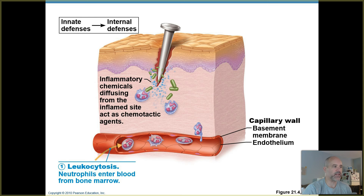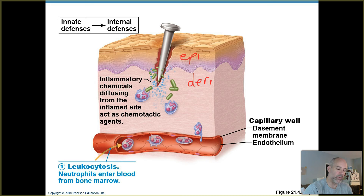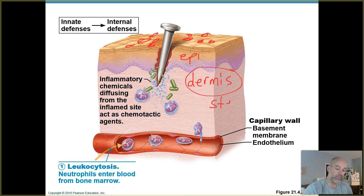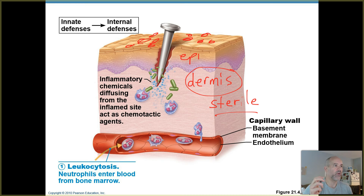The next few slides come from Figure 21.4 in the textbook, showing the different steps of inflammation. This person has been stabbed with a nail that has penetrated the skin — through the epidermis and down into the dermis. We all have bacteria on our skin all the time, so when something penetrates the surface it drags skin bacteria down into the dermis, which is supposed to be sterile. The nail itself may also have had microorganisms on it that get dragged into these tissues.